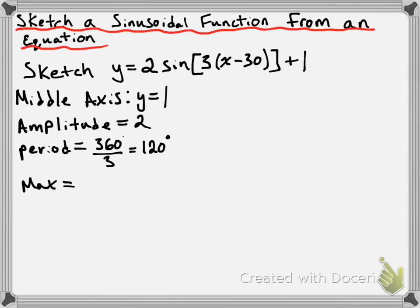Our maximum value occurs one amplitude's worth above the middle axis. Our middle axis is 1 and our amplitude is 2, so we go 2 units above 1, which puts us at 3. Our minimum value occurs one amplitude's worth below the middle axis — 2 units below y equals 1 — putting us at negative 1.